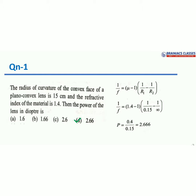You can also write 1/f = (μ − 1)[(1/∞) − (1/−0.15)], and both approaches give the same result. It doesn't matter how you orient your plano-convex lens — left side plane and right side convex, or left side convex and right side plane. Both ways the answer is the same, because the sign conventions change for the convex surface depending on whether you measure to the left or to the right.